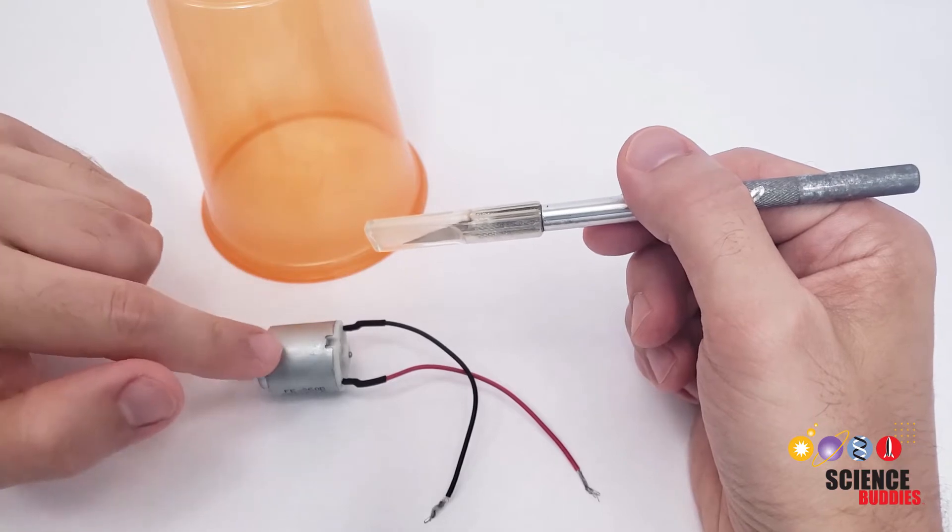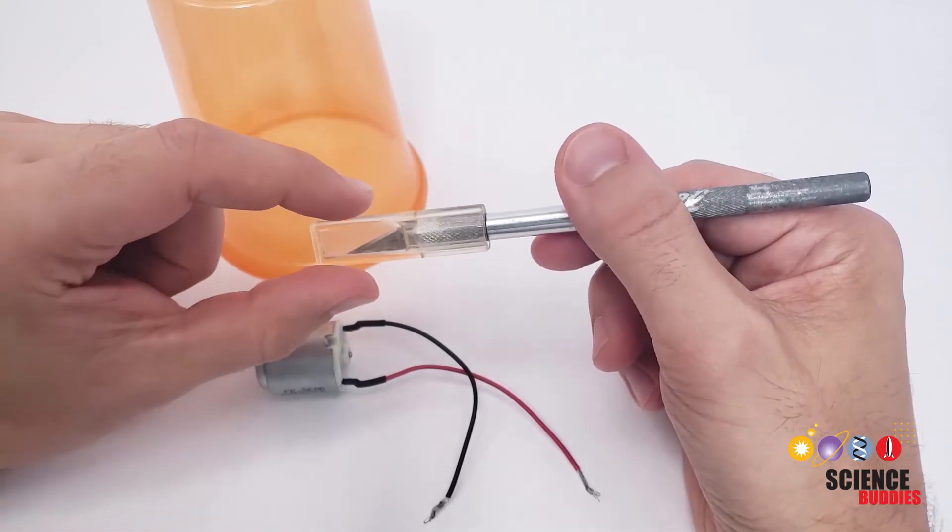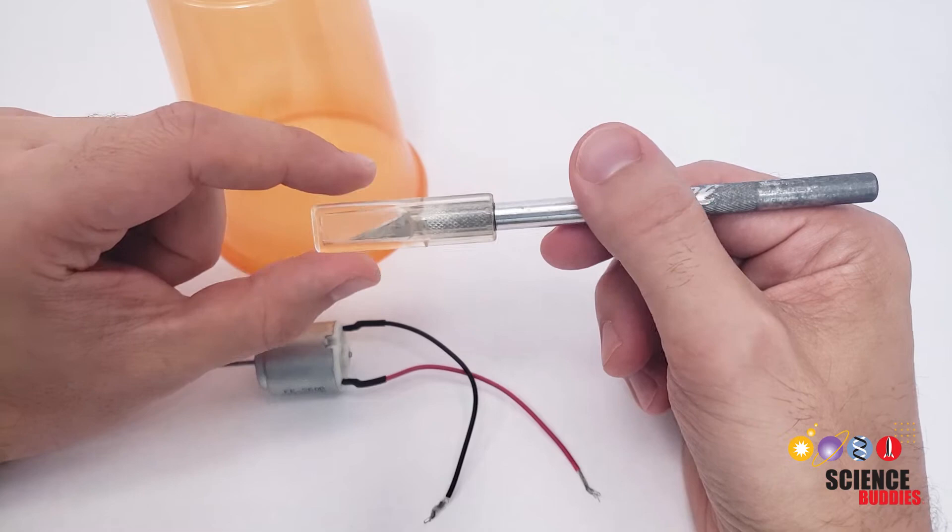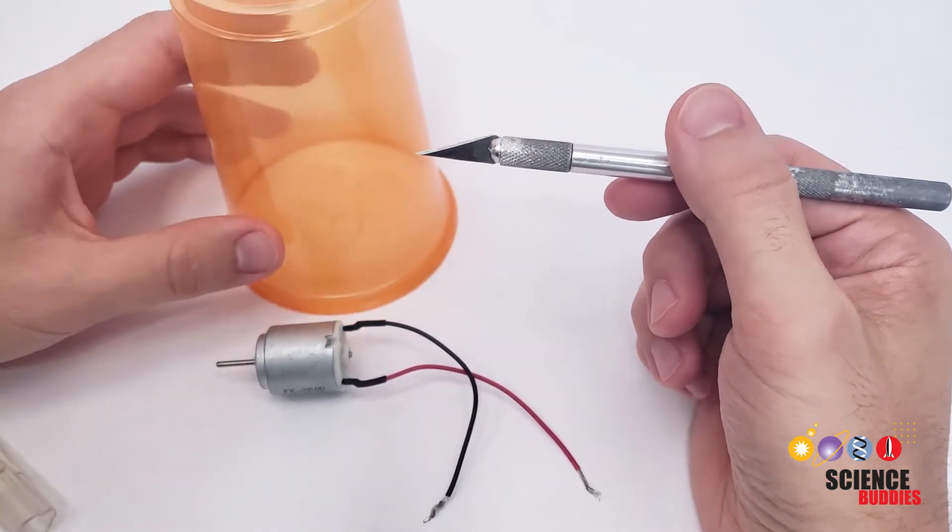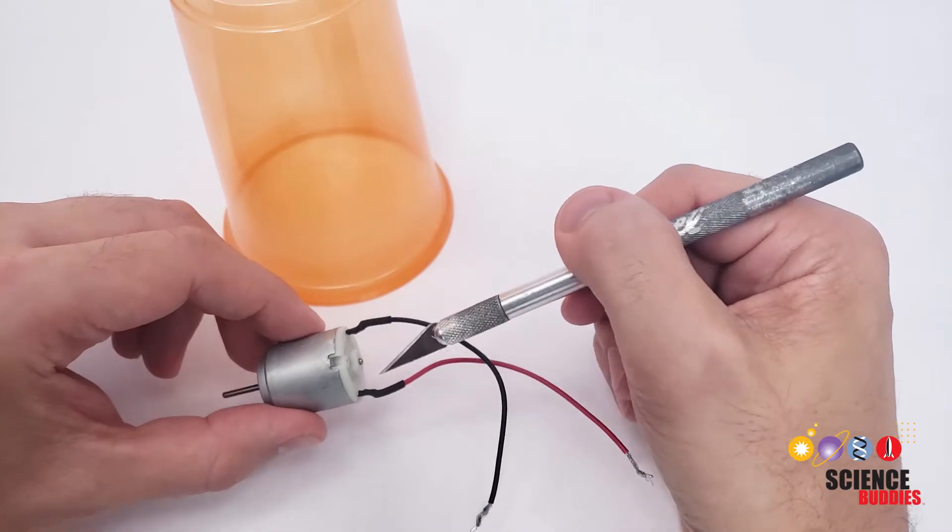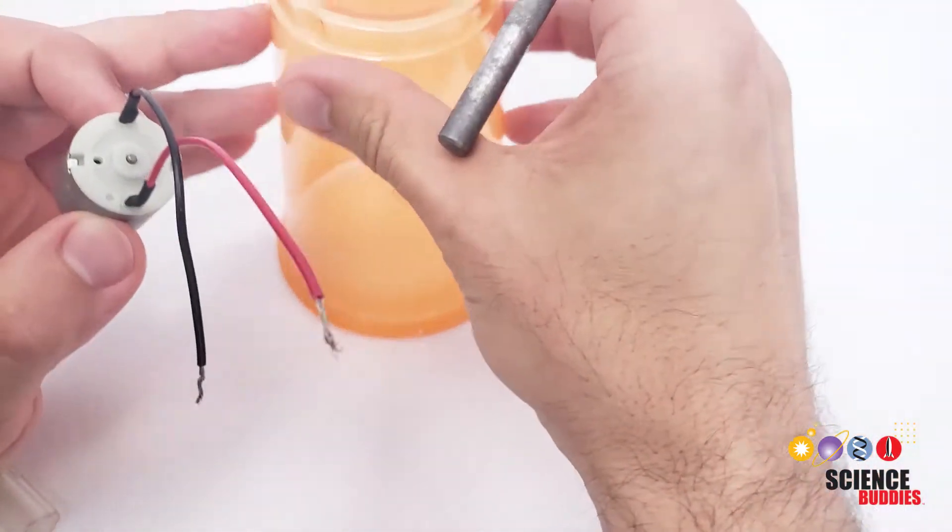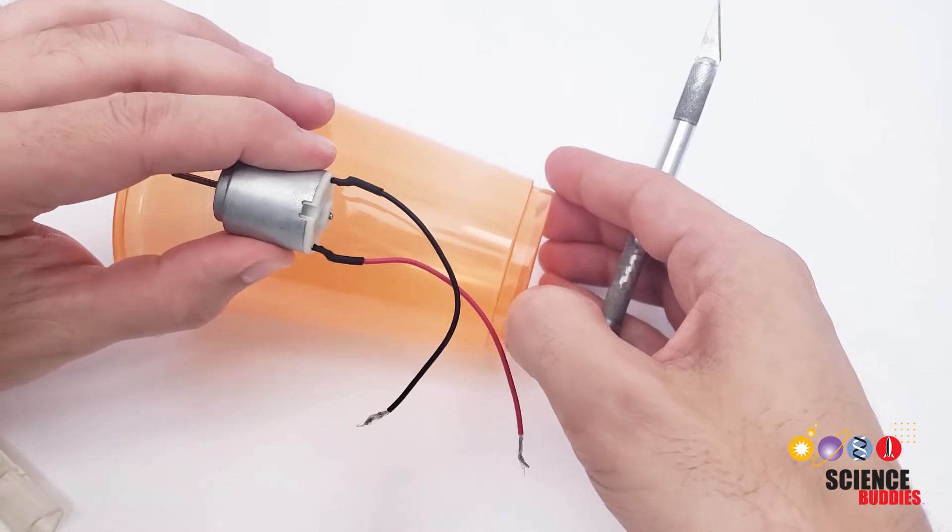To get started, take the motor, the cup, and the hobby knife. Now, these knives are very sharp, so make sure you have adult supervision for this part. You are going to use the knife to poke two holes in the cup that are the same spacing apart as the wires on the motor, and you're going to do that about halfway up the height of the cup.